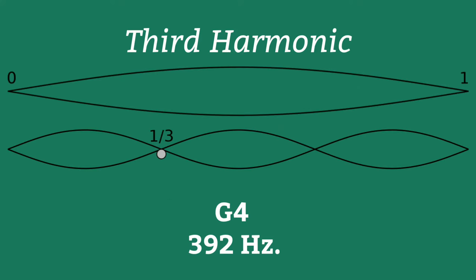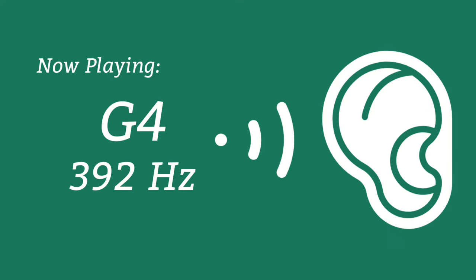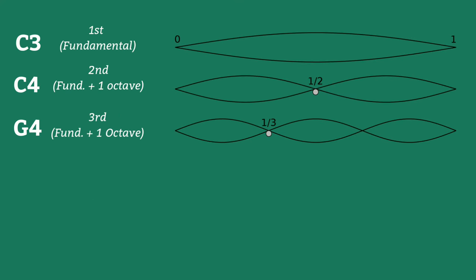The third harmonic is three times the frequency of the fundamental, and accounts for one-third the length of the string. We hear this as the perfect fifth above the first octave, or in this case, G4.